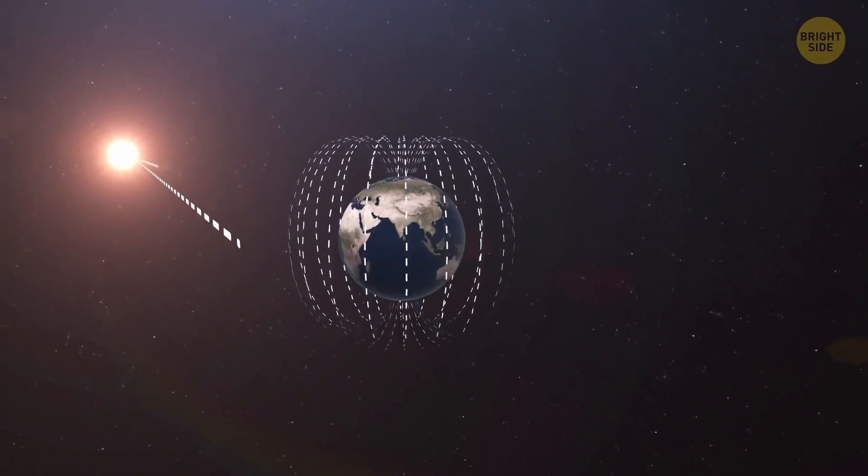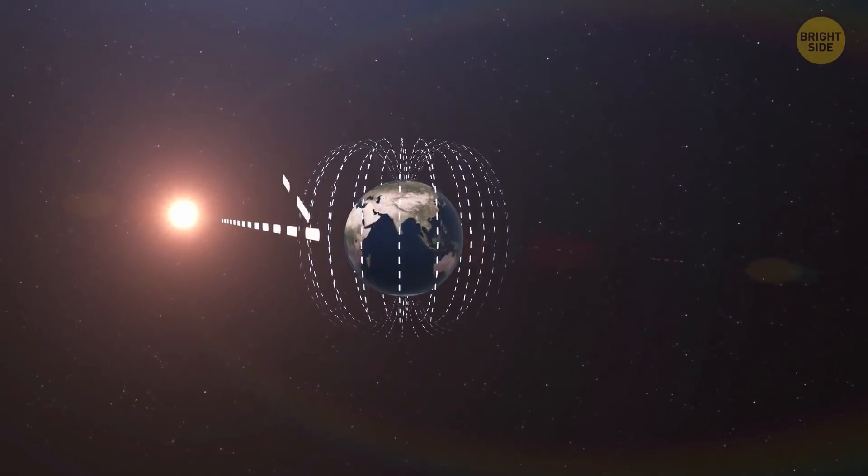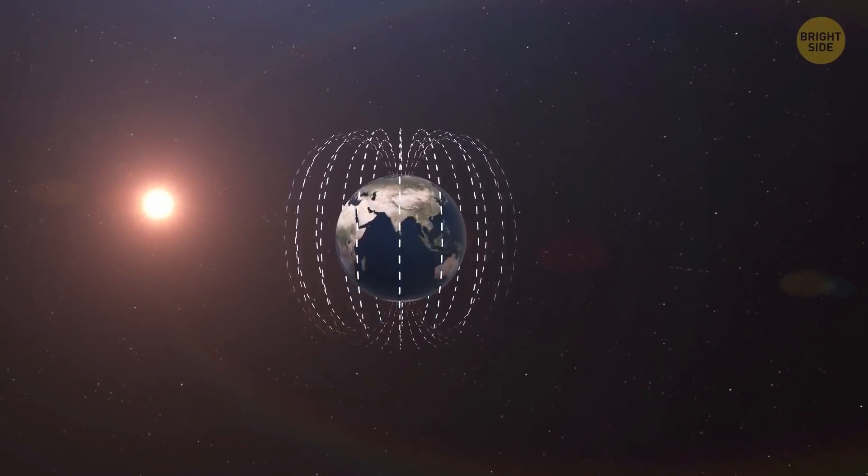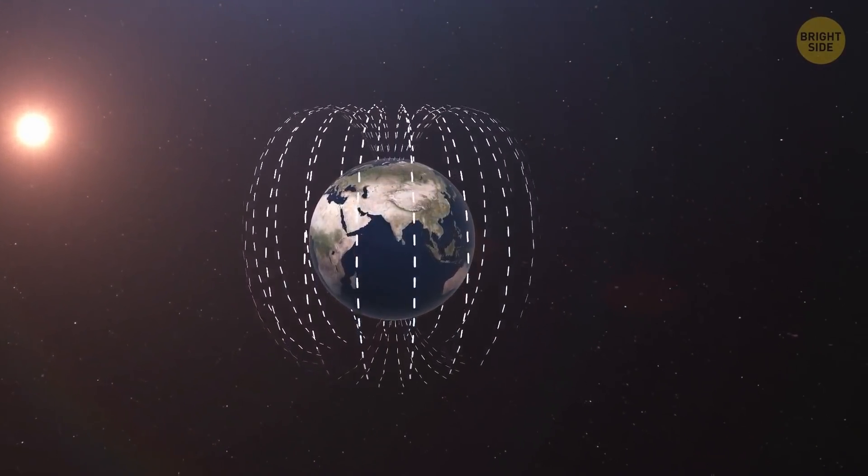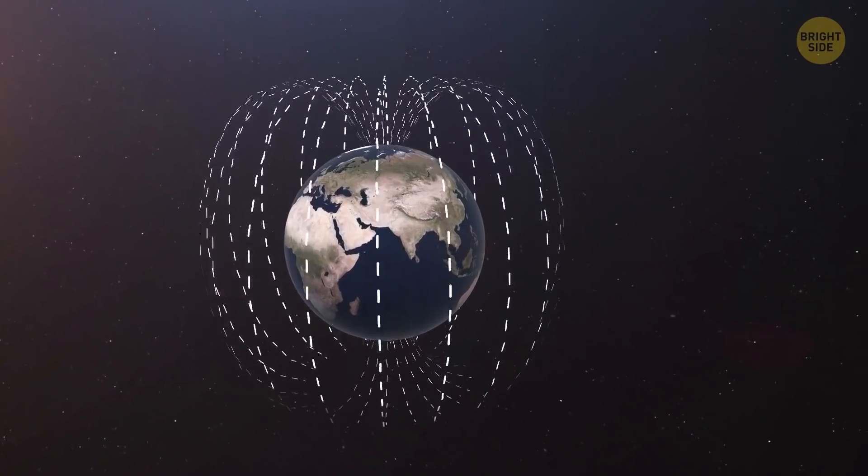including highly charged particles from the Sun and cosmic radiation. What's more, thanks to this geomagnetic shield, solar winds can strip away the Earth's atmosphere.